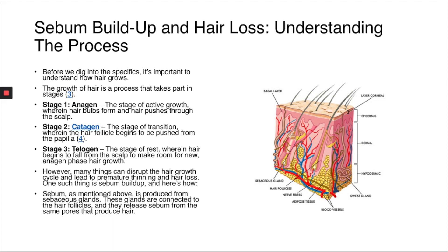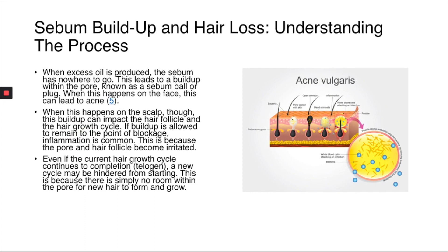Many things can disrupt the hair growth cycle and lead to premature thinning and hair loss, and one of these is sebum buildup. Sebum is produced from the sebaceous glands, which are connected to the hair follicles and release sebum from the same pores that produce hair. When excess oil is produced, the sebum has nowhere to go, leading to a buildup within the pore known as a sebum ball or plug. On the face this can lead to acne, but on the scalp the buildup can impact the hair follicle and the hair growth cycle.